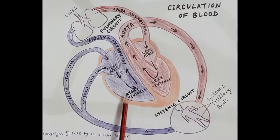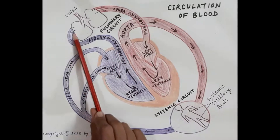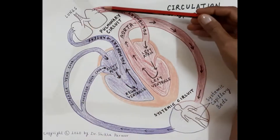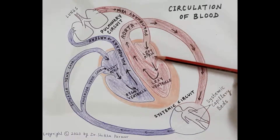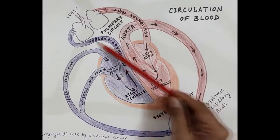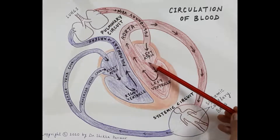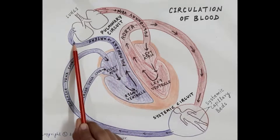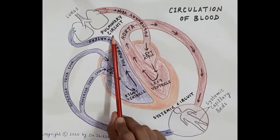When the right ventricle contracts, the deoxygenated blood is pumped into the pulmonary artery, and via the pulmonary artery this blood reaches the lungs. In the lungs, the deoxygenated blood is oxygenated, and the oxygenated blood is carried by the pulmonary vein to the left atria. This circulation of deoxygenated blood from the right atria to the lungs and the return of oxygenated blood to the left atria is termed pulmonary circulation.